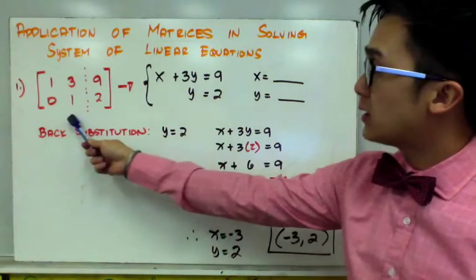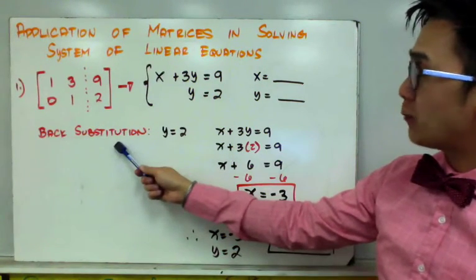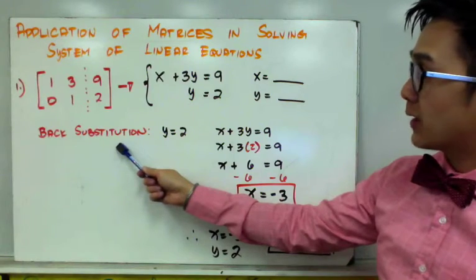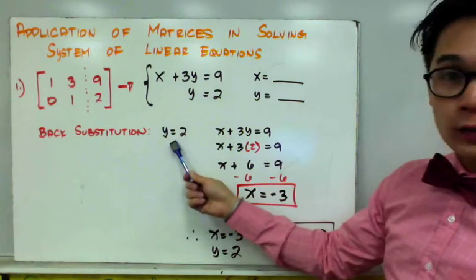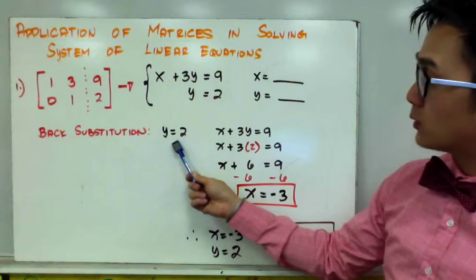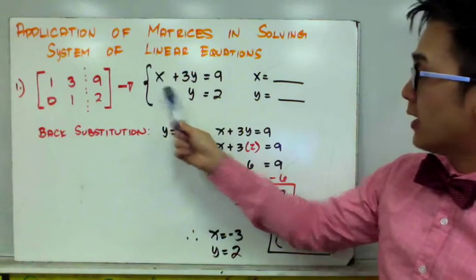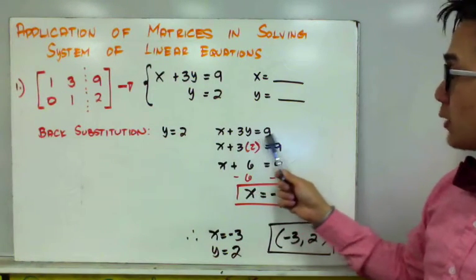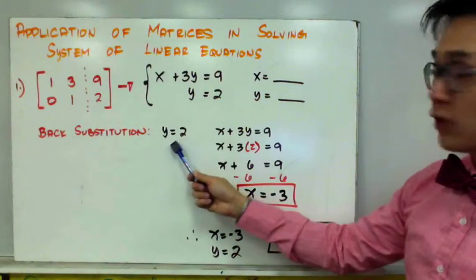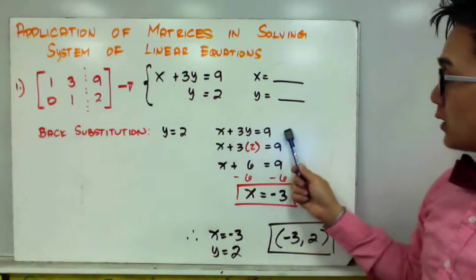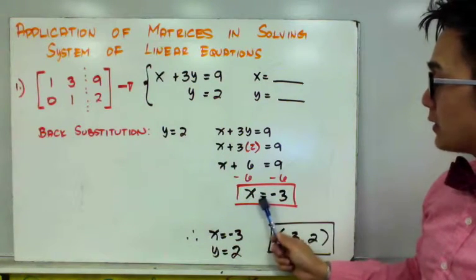From the augmented matrix, changing it into a linear system and using back substitution, we'll be able to find the solution. Since the second equation gives us y is equal to 2, we substitute this into equation one. Given x plus 3y is equal to 9, substituting y equals 2, we get x plus 3 times 2 is equal to 9, therefore x is equal to negative 3.